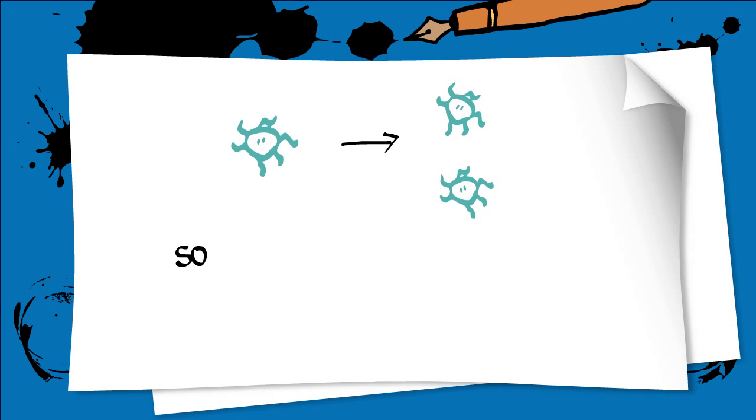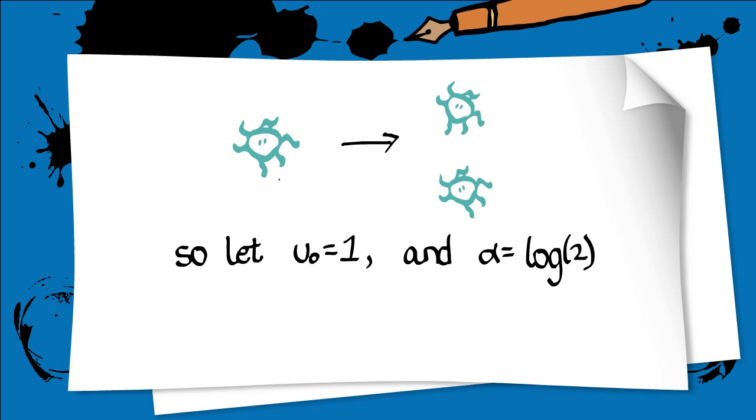We let the initial concentration u0 to be one, and alpha equal to log of two, so this gives us the solution u(t) equals two to the t.